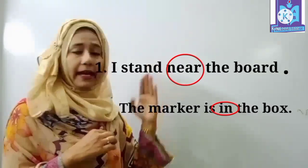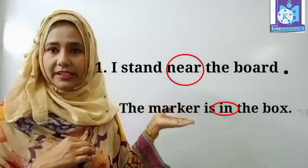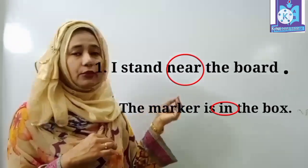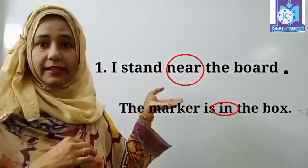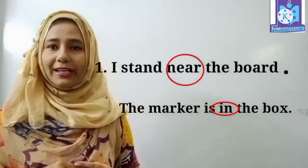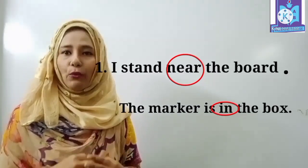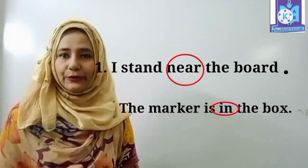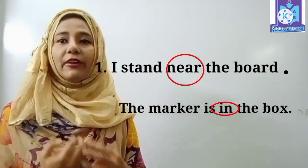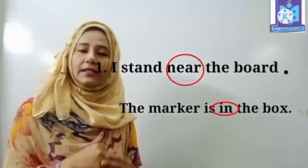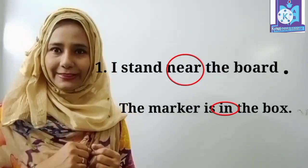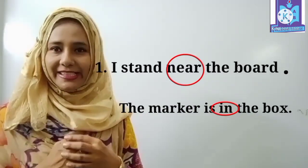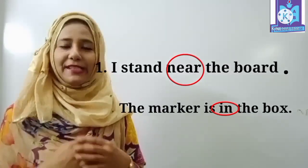Here, 'near' and 'in' are telling the position of someone or something. So, do you know? These words — near and in — are called what? Yes, these words are called preposition. So we use preposition for telling the position of a naming word, noun, or pronoun. Can you guess today which topic I am going to discuss? Yes, preposition.